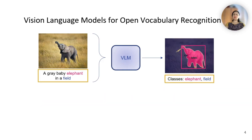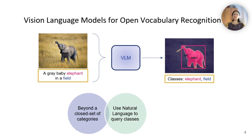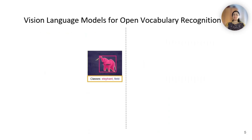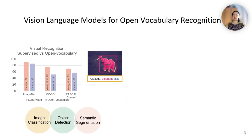Open Vocabulary Recognition refers to the task of recognizing and understanding objects or visual concepts in images beyond a closed set of categories. It involves the ability to detect and identify objects that may not have been part of the training data, defined by text queries during inference. Vision-language models have enabled this task by matching information contained in image-text pairs. Open Vocabulary techniques have made significant advancements in tasks like image classification, object detection, and semantic segmentation, even achieving comparable performance against supervised methods.